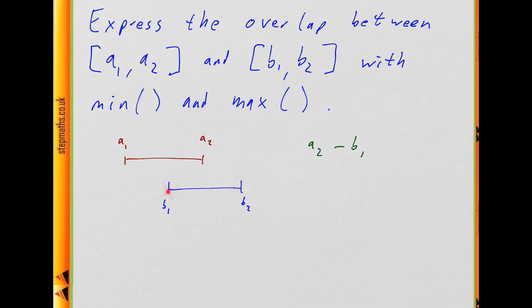One thing that could happen is this interval could be over to the right instead. Let's say b2 could be here and b1 could be here, in which case it would be b2 minus a1. That's something else we could get if the interval was here instead.